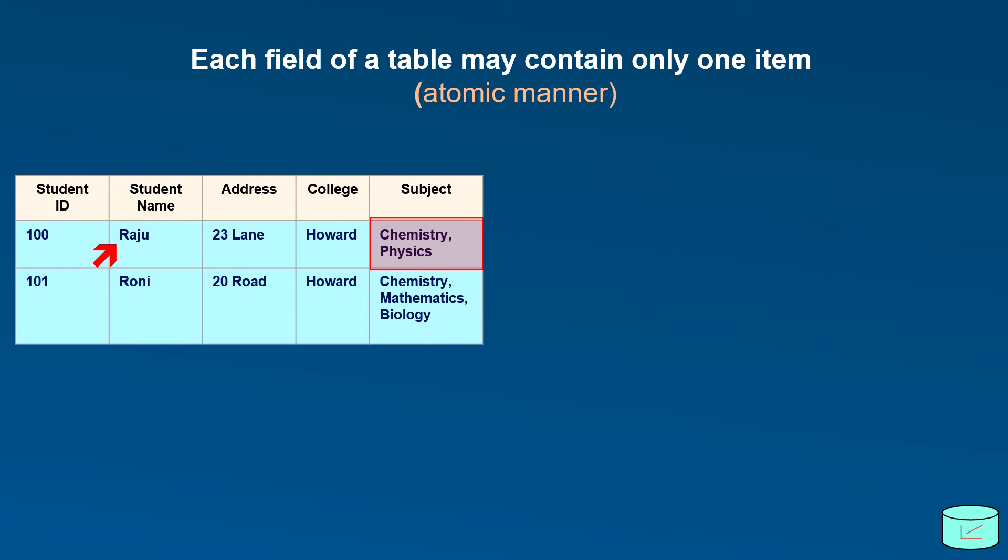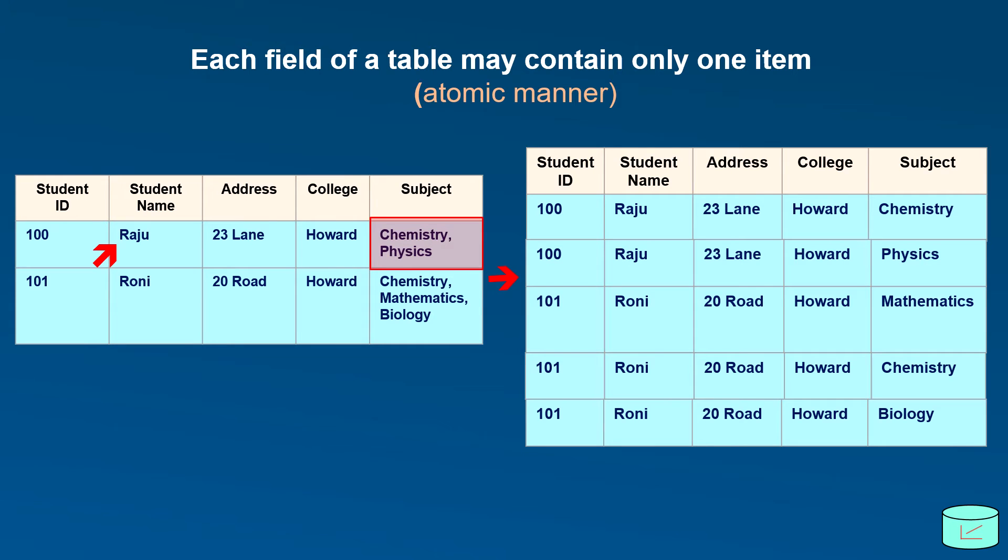In a new student table, two rows was created for Raju, for two subjects. Similarly, Roni have three subjects: chemistry, mathematics and biology. Here we need to create three rows for Roni because of three subjects. One can say there is a repetition of data. This repetition can be solved in a second and third normal form.